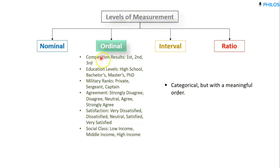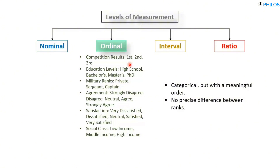So both nominal and ordinal are categorical, but you can't rank nominal while you can rank ordinal — that's the key difference. Your level of agreement, level of satisfaction, social class, or military ranks all have a meaningful order. Another characteristic is there is no precise difference between the ranks. For example, if the student in first position scored 95 and the one in second position scored 90, the difference is only 5 points.